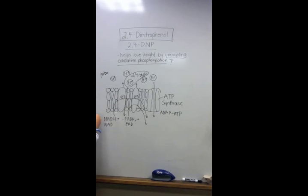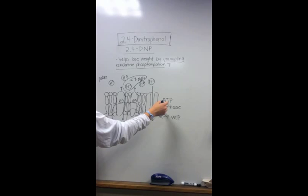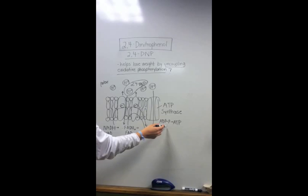But what the 2,4-DNP does is it carries H+ ions through the membrane because it's a non-polar molecule. The situation can sort of be described as a leak because now instead of having to flow through the ATP synthase and creating ATP, the 2,4-DNP can carry the H+ ions straight through the membrane without having to go through the ATP synthase and preventing ATP from being created.